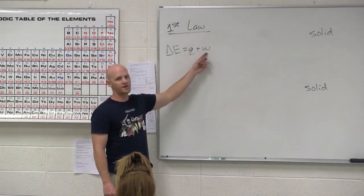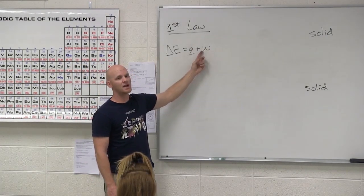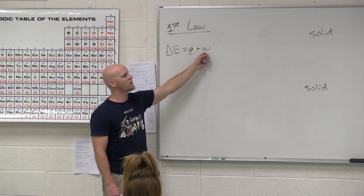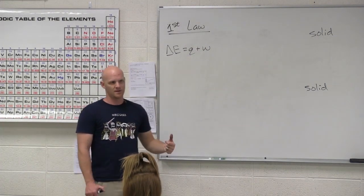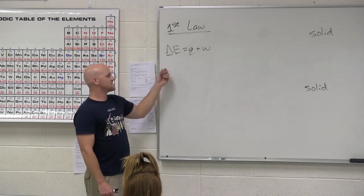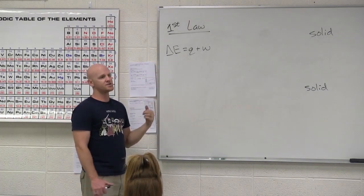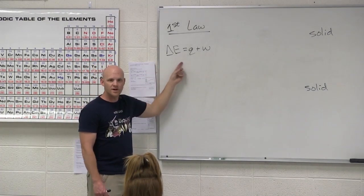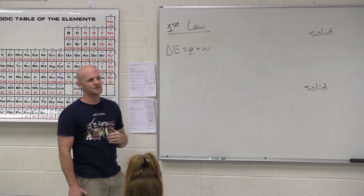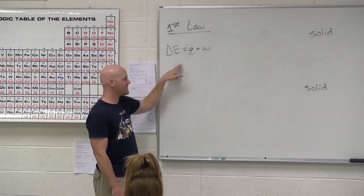W, work or more properly the change in work. This is the other way that energy can enter or leave a system. So in this case you cannot create or destroy energy. It must enter or leave a system in one of a couple of ways. That's why we can call this the first law of thermodynamics in kind of a mathematical expression.